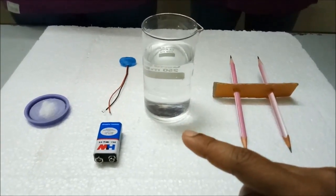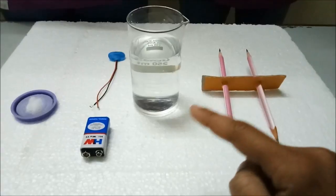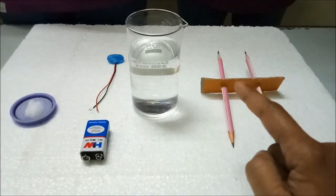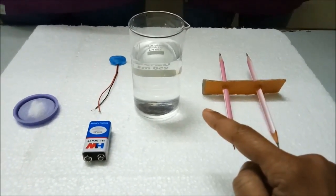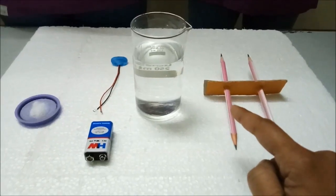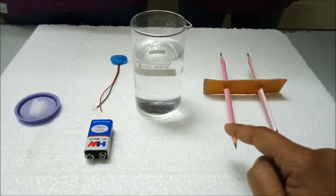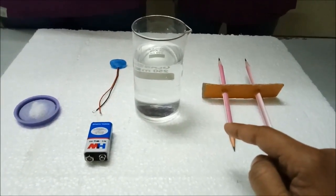Oxygen undergoes reduction so it will be collected at cathode, and hydrogen gets collected at anode as it undergoes oxidation. My students are going to perform this activity.